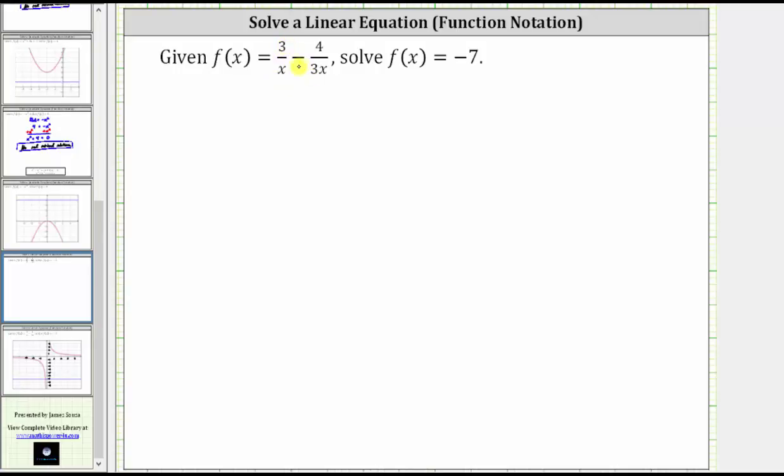Given f(x) = 3/x - 4/(3x), solve f(x) = -7.